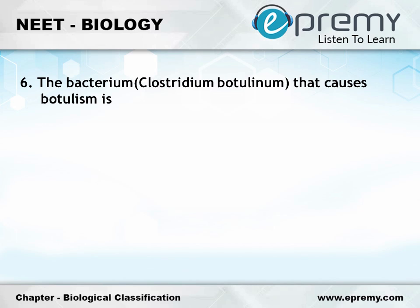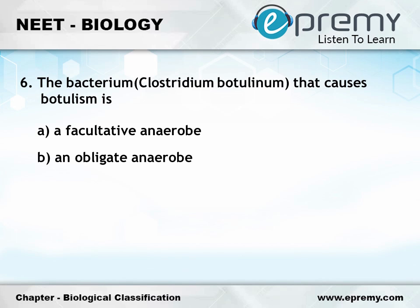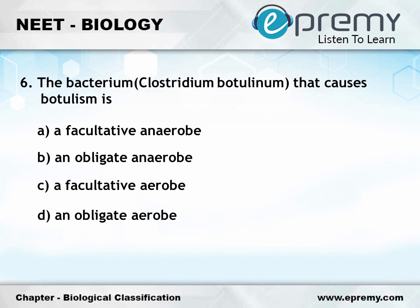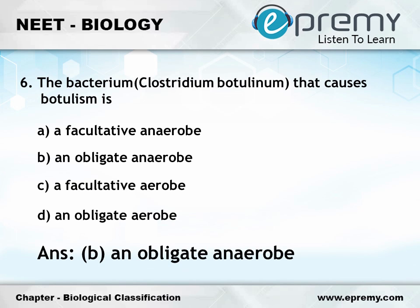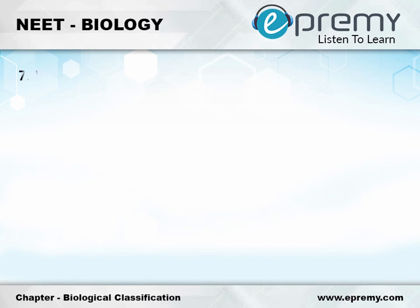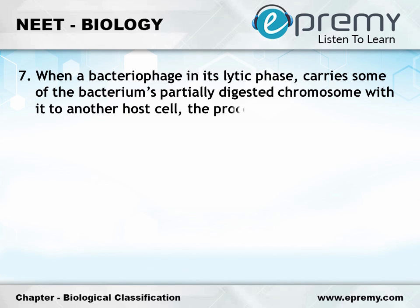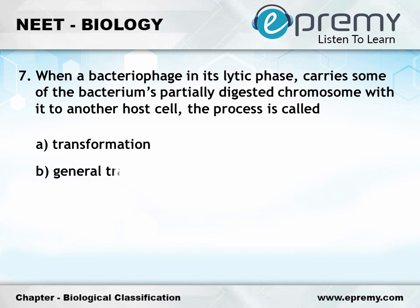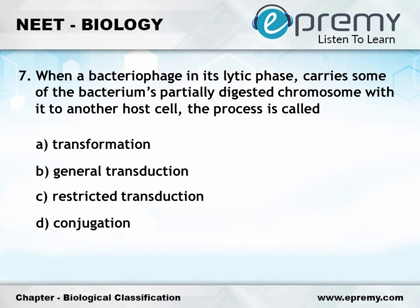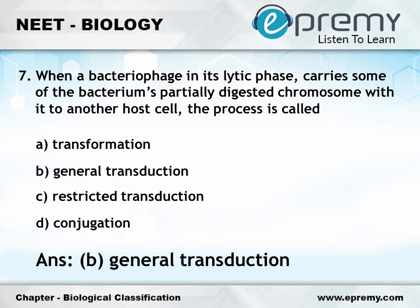Question number 6: The bacterium Clostridium botulinum that causes botulism is — Option A: facultative anaerobic; Option B: an obligate anaerobe; Option C: facultative anaerobe; Option D: an obligate anaerobe. The answer is Option B, an obligate anaerobe. Question number 7: When the bacteriophage in its lytic phase carries some of the bacterium's partially digested chromosome to another host cell, the process is called — Option A: transformation; Option B: general transduction; Option C: restricted transduction; Option D: conjugation. The answer is Option B, general transduction.